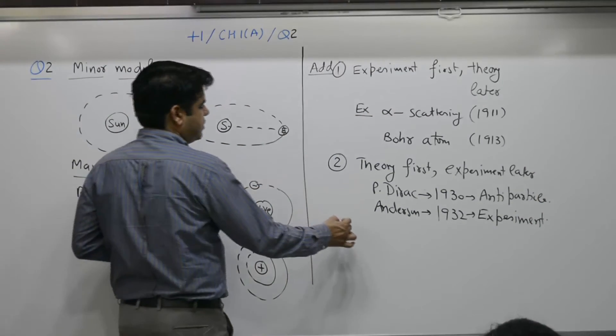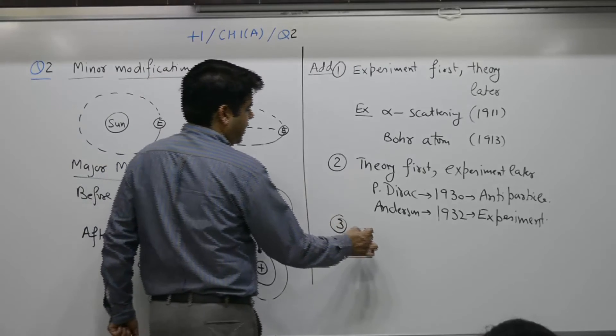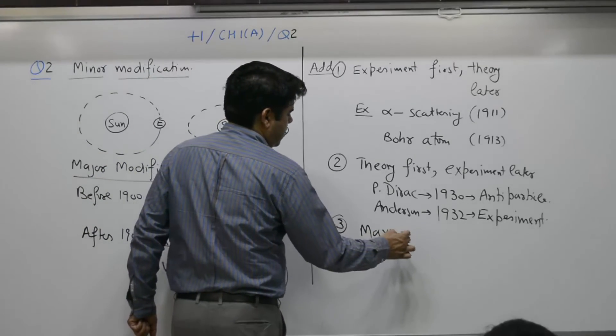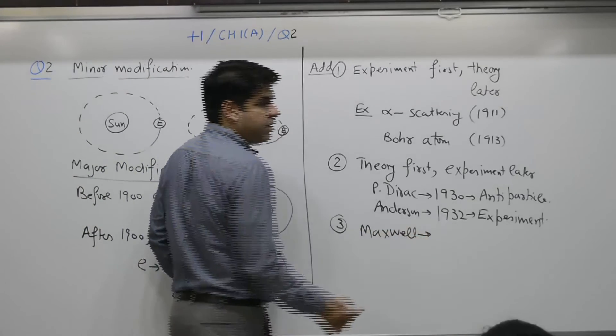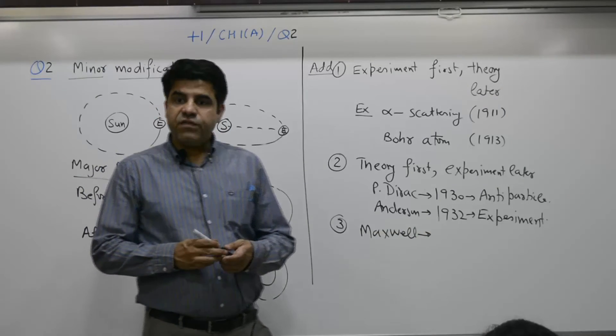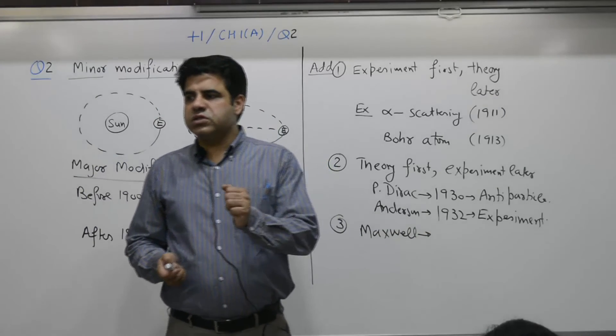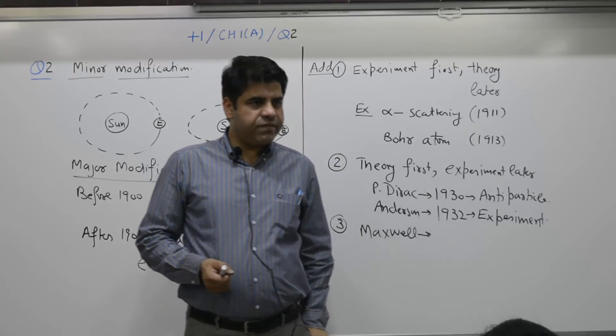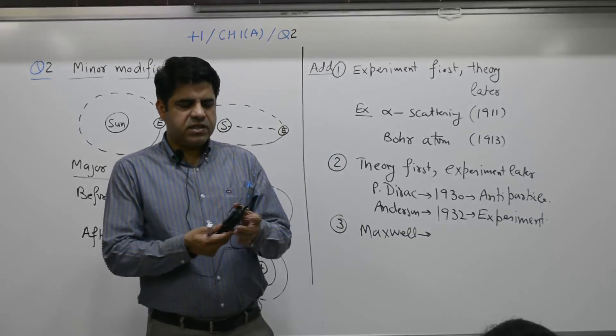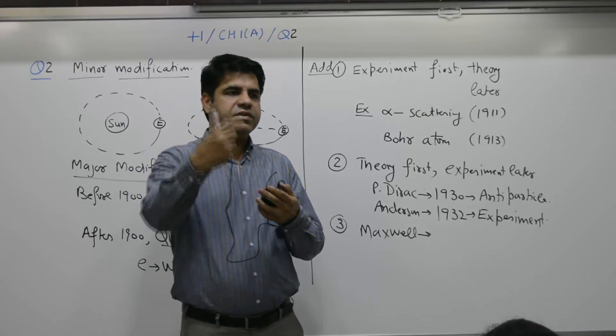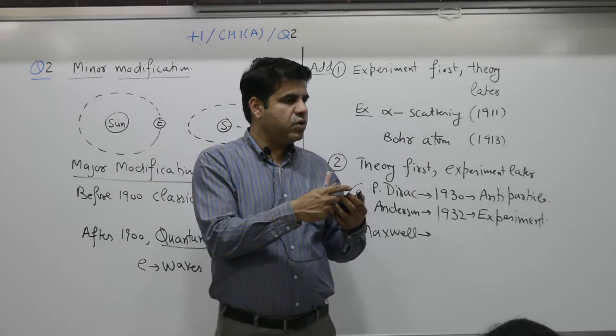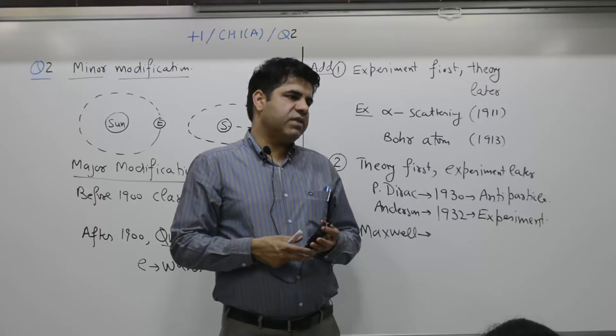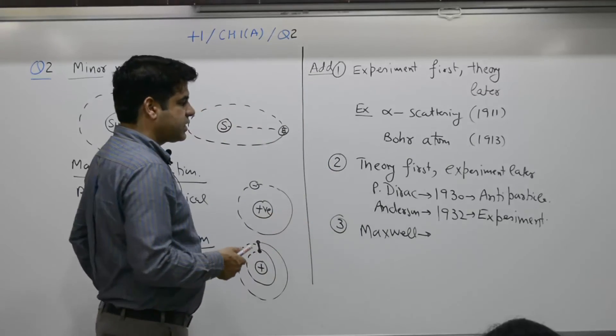And one more example which is not given here. Maxwell, name of the scientist is Maxwell, gave theory of electromagnetic wave. All of you use electromagnetic wave - mobile phone, how are you connected? Electromagnetic wave. In this case, there is antenna connected with the camera. How? Electromagnetic waves. The theory was given by Maxwell.